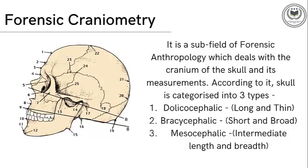Next, forensic craniometry. Craniometry is the technique of measuring the bones of the skull. Brain volume data and other craniometric data is used in mainstream science to compare modern-day animal species and to analyze the evolution of human species in archaeology. According to craniometry, the skull is categorized into three types: dolichocephalic, which means long and thin; brachycephalic, which means short and broad; and mesocephalic, which means intermediate length and breadth.